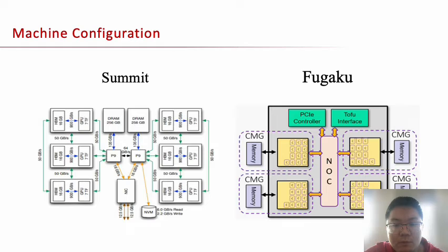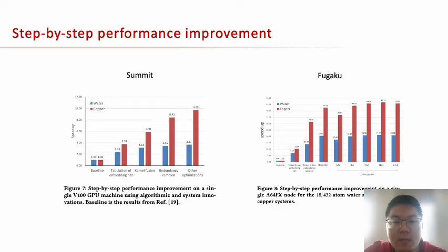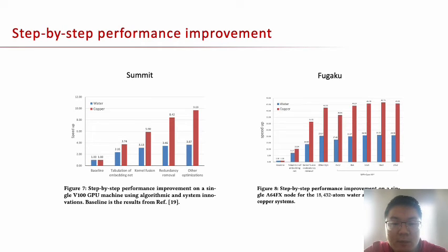For Fugaku, its computing node has an A64FX ARM processor with 48 computing cores and 32 GB HBM2 memory. This shows the step-by-step performance improvement on Fugaku and Summit. On Summit, we achieve speedups of 3× and 9× for the water and copper systems respectively. On Fugaku, we achieve speedups of 20× and 46× for the water and copper systems. Fugaku achieves better improvement because the baseline on Summit was already highly optimized. The copper system has a larger speedup because it has more neighbor atoms, making its EmbedNet more time-consuming.